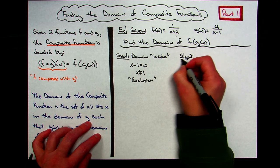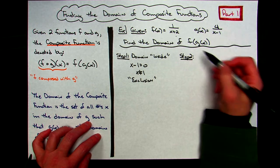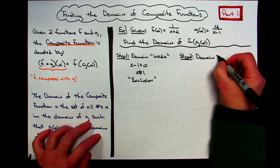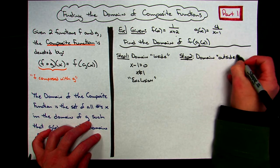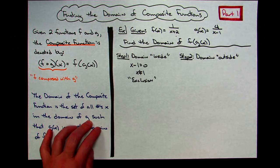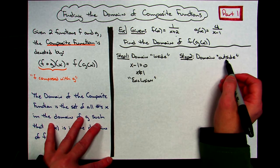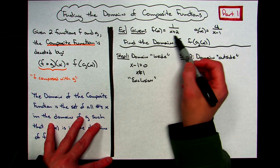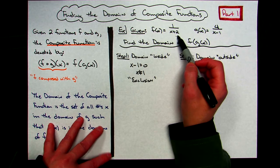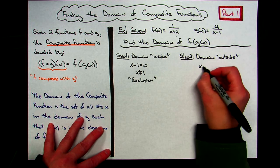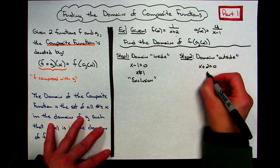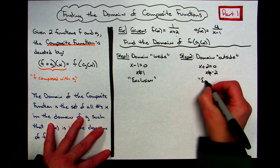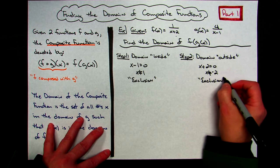Now step two: find the domain of the outside function. I don't want you to memorize f or g — refer to it as the outside function, because if they change the letters it wouldn't work. My outside function is f of x, and again it's a rational function. I take the denominator, set it equal to zero: x plus 2 equals 0, subtract 2 from both sides, giving x equals negative 2. That is an exclusion — x cannot equal negative 2.